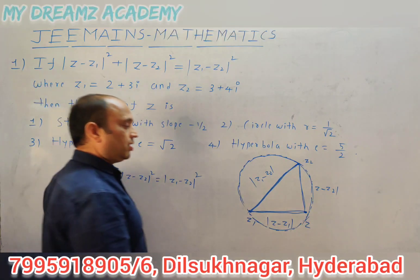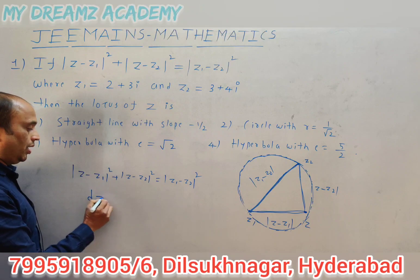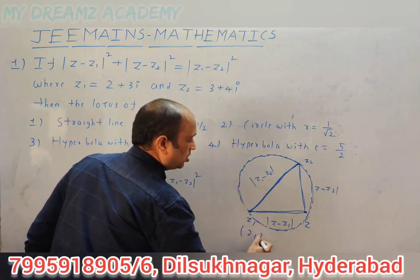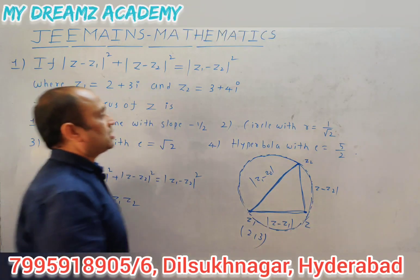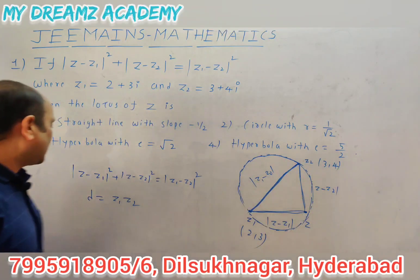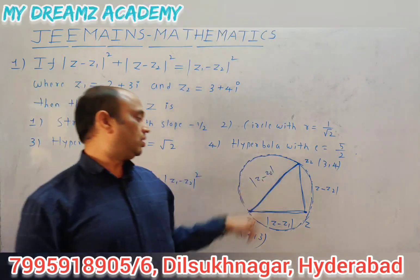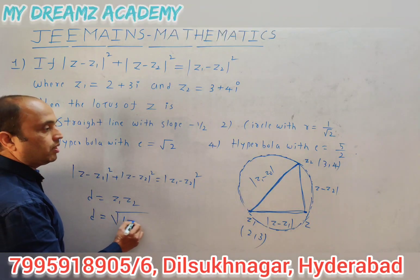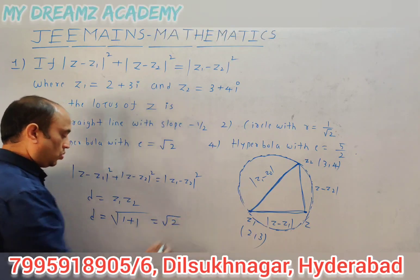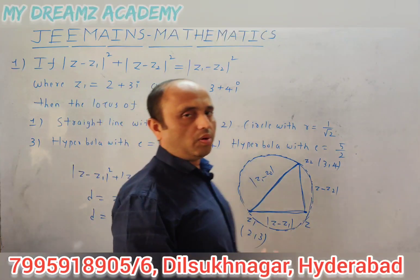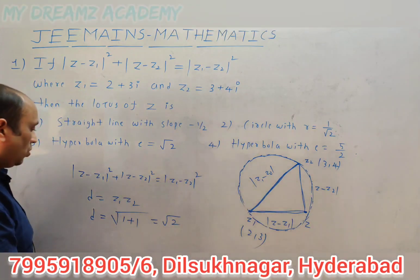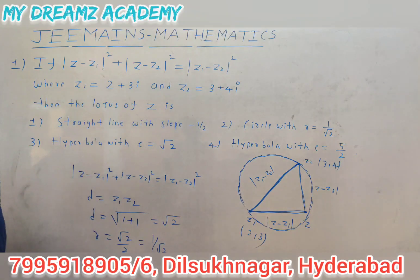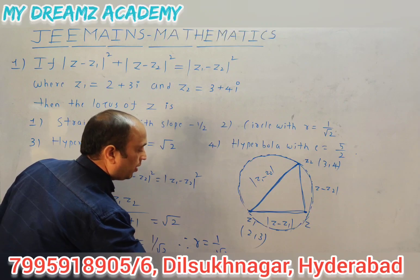Now we want to find the diameter. Diameter equals the distance between z1 and z2. z1 = (2, 3) and z2 = (3, 4). The distance is √((x2-x1)² + (y2-y1)²) = √2. This is the diameter. So the radius r = √2 / 2 = 1/√2.